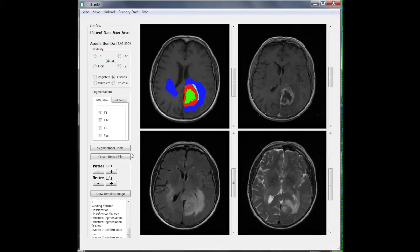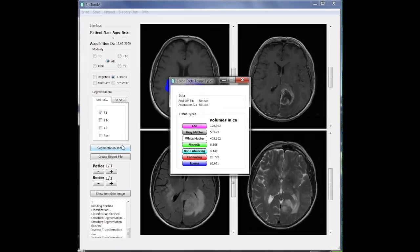To be able to see the calculated volumes, you have to click segmentation table and here you may find the different volumes calculated.